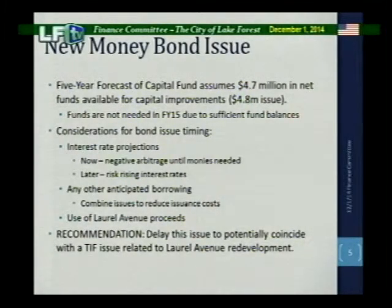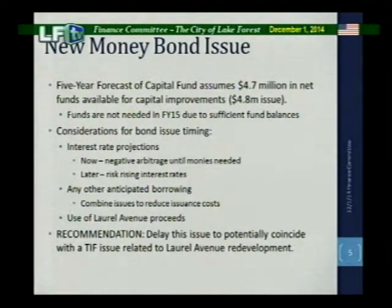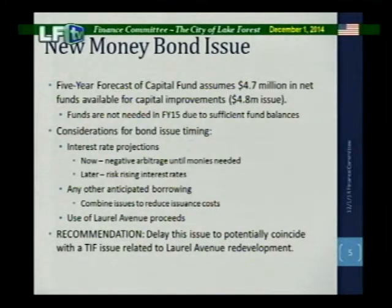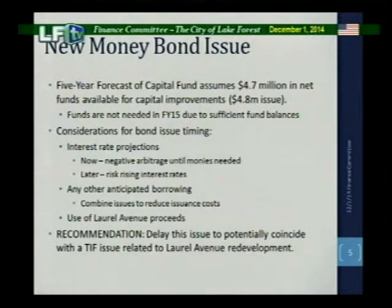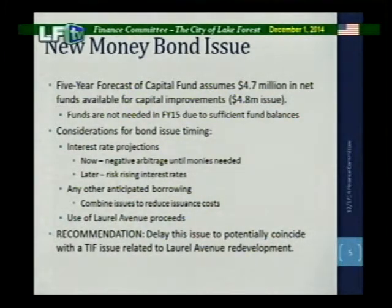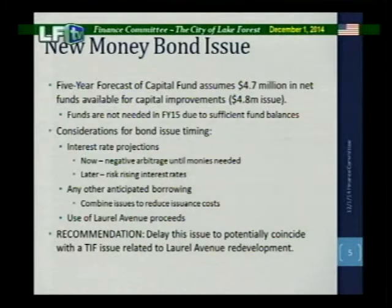The question becomes: will interest rates rise by more than 26 basis points in the next 18 to 24 months? Hard to know, but at least we know the magnitude. Other considerations include any other anticipated borrowing, because the city could combine those issues and save on issuance costs. There is a potential for issuing bonds in 2015 related to the Laurel Avenue redevelopment. The city could postpone the issue, combine them, and save on issuance costs. Additionally, use of Laurel Avenue proceeds — which will not be considered by the city council until early 2015 — could provide opportunities for either paying off debt or using those funds for capital improvements.